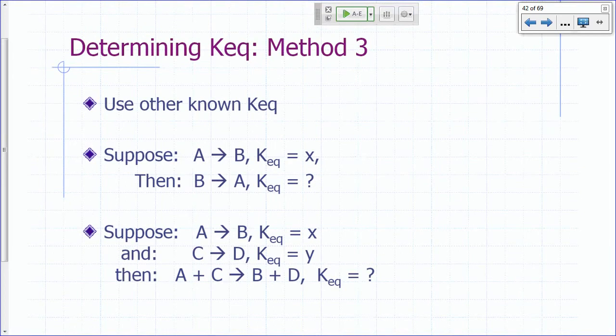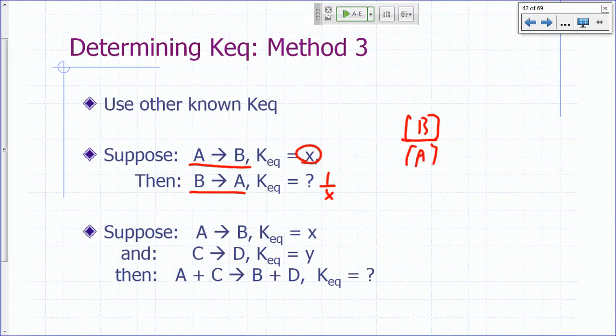Let's just review what we said before that if you write the reaction as A going to B and the KEQ happens to be X, if you flip that reaction, what's your KEQ? 1 over X, right? So instead of B over A at equilibrium, you would calculate the ratio of A over B.